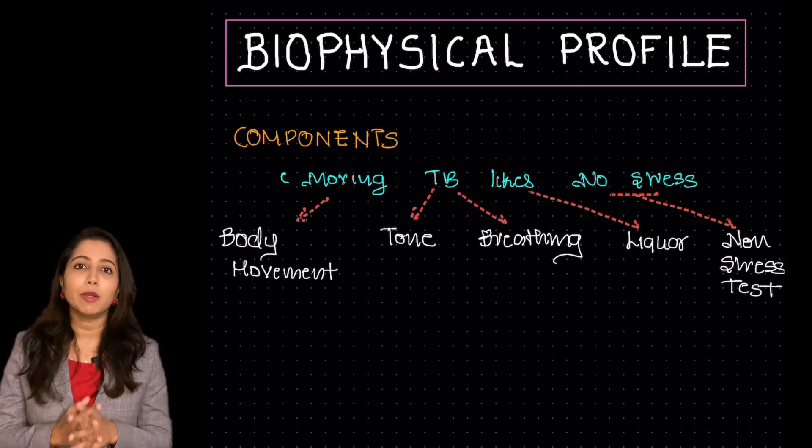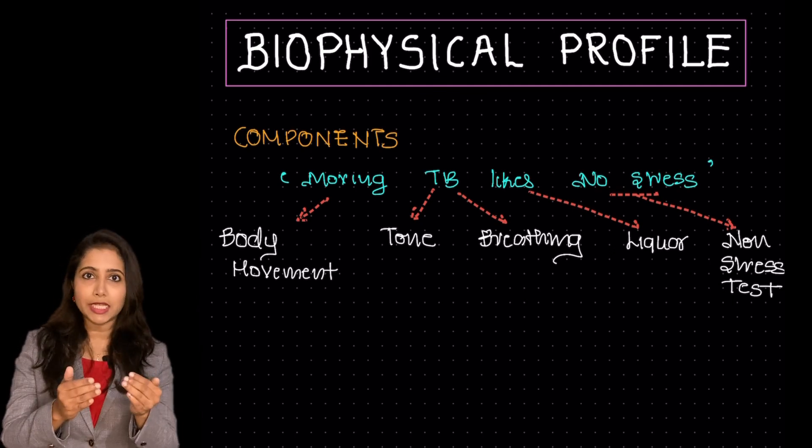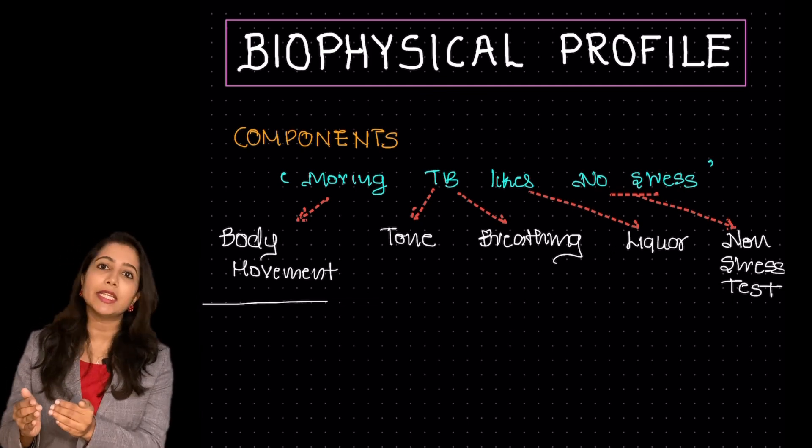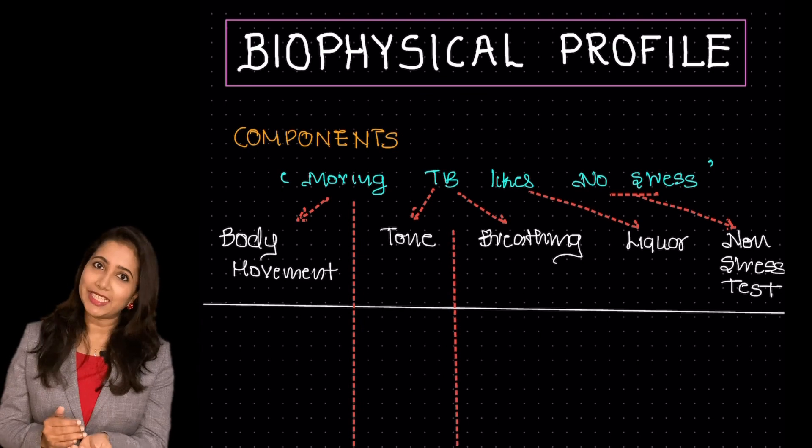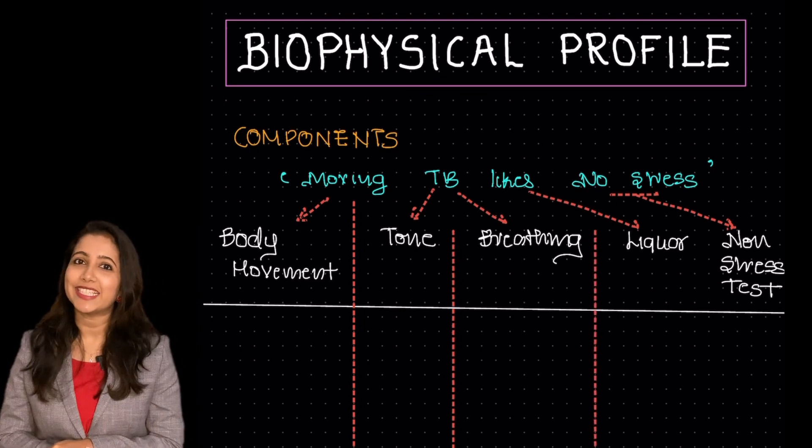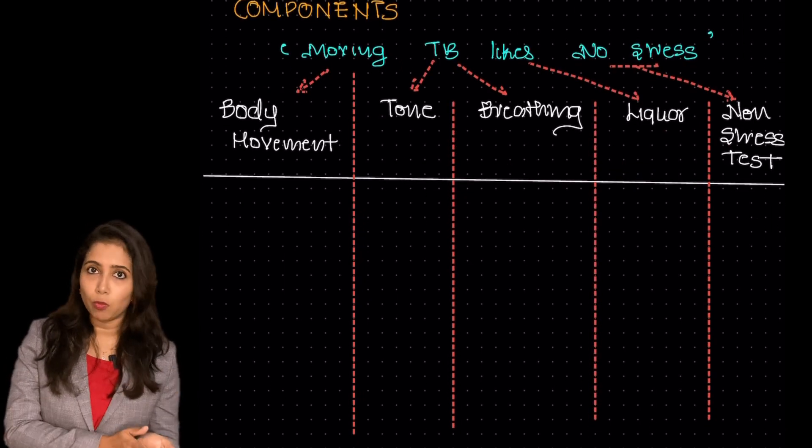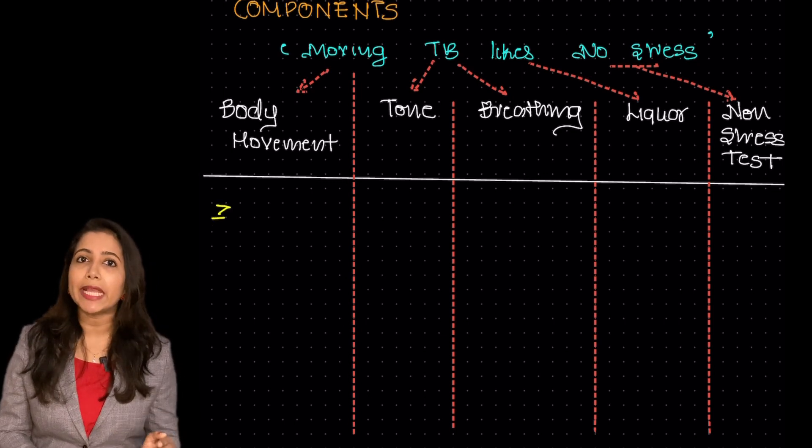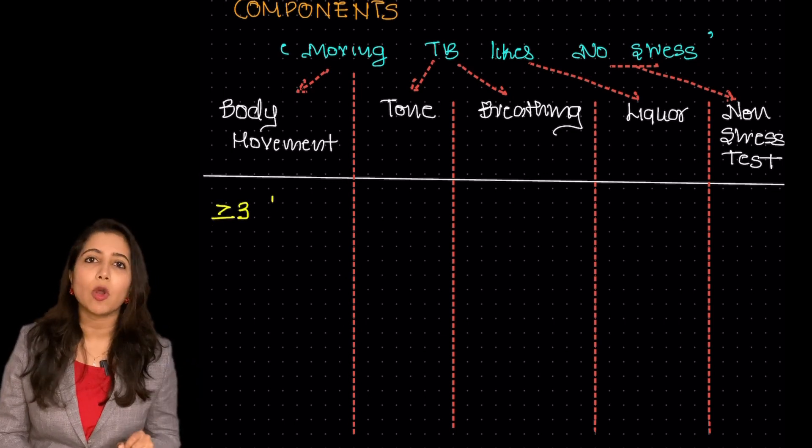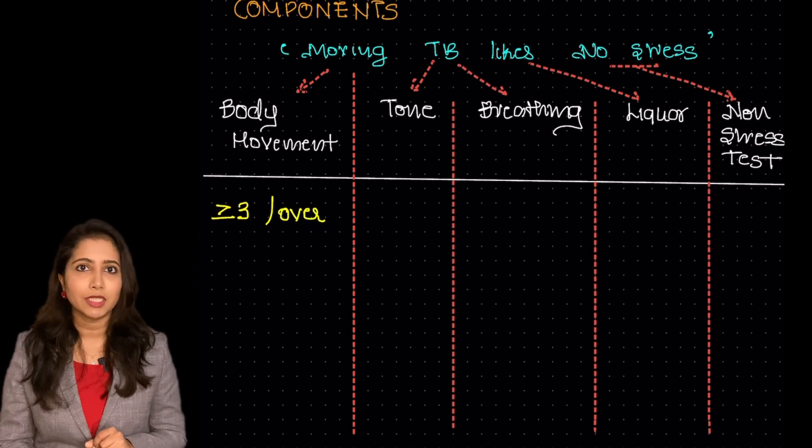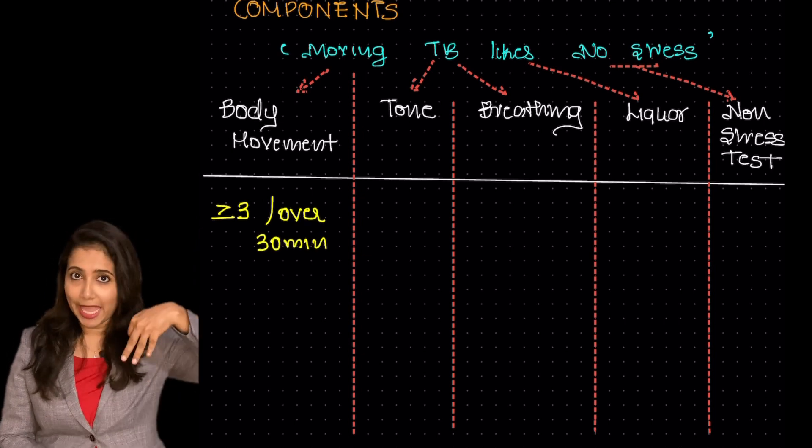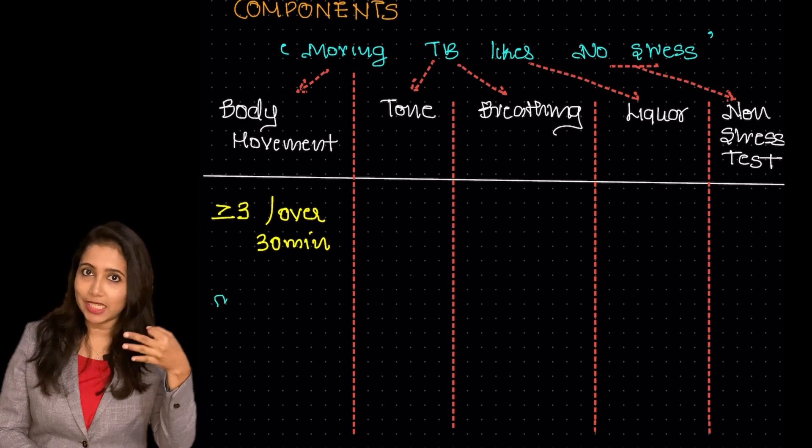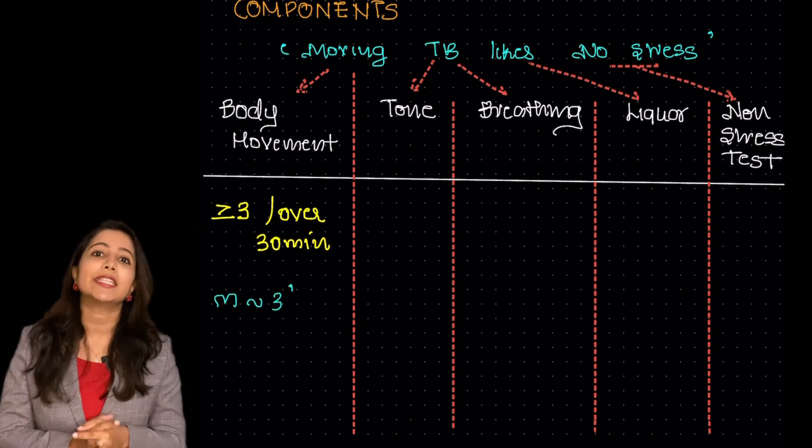Coming to each component, the moving is for the movement, TB that is tone and breathing, likes is for liquor, no stress is for non-stress test. About the movement, it is the gross body movements and there should be at least 3 gross body movements over a period of 30 minutes. You can just see the M resembles a 3, so you can correlate it like that.